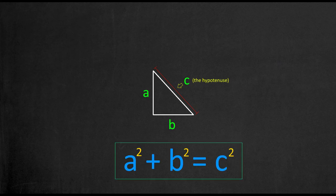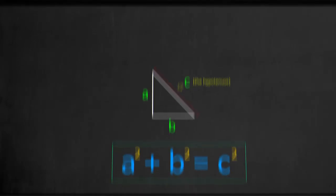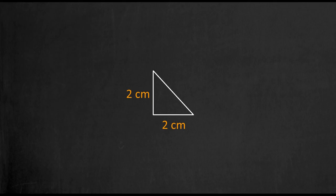For example, if you wanted to use the so-called Pythagorean theorem to find the length of the hypotenuse of a triangle whose other two sides or legs each measure 2 cm, then you would need to do the following.